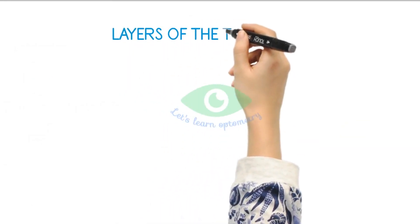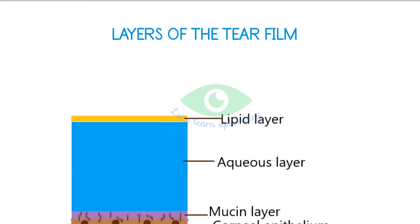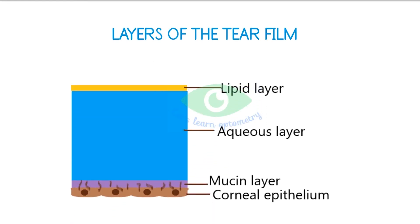The tear film is composed of three layers: the outer lipid layer, the middle aqueous layer, and the inner mucus layer. Let's see them in detail.